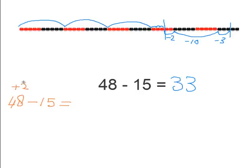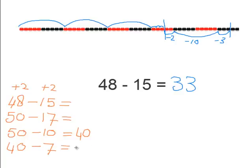And if we add 2 to the 48, we always must add 2 to the 15 then. You have to do the same to each side. So 50 minus 17. Now let's first subtract 10 from the 50. So 50 minus 10 equals 40. So now we only have to subtract 7 from the 40. So 40 minus 7 equals 33 as well.